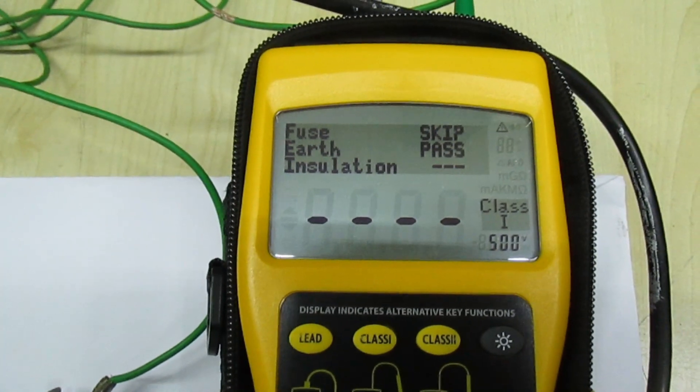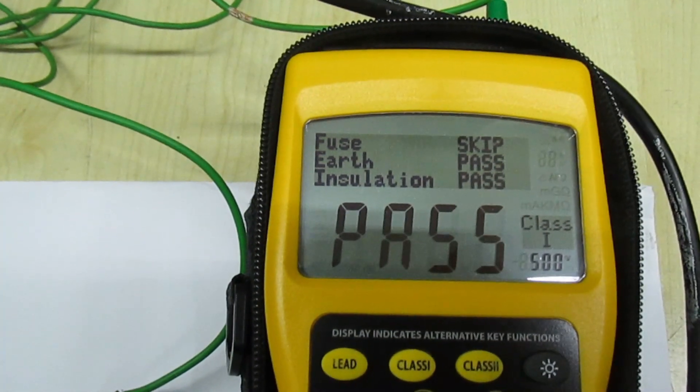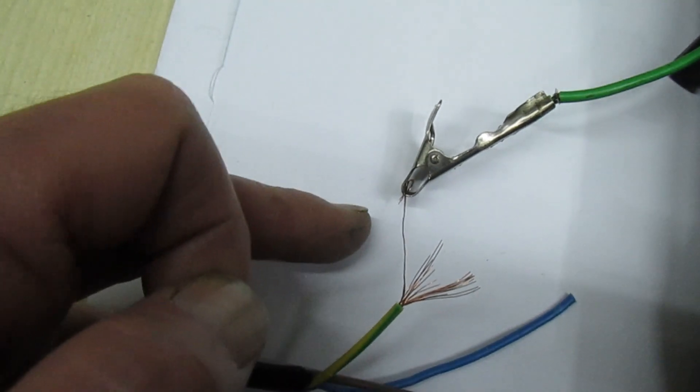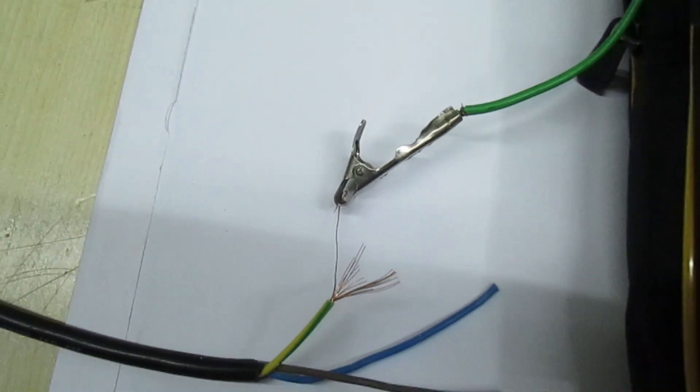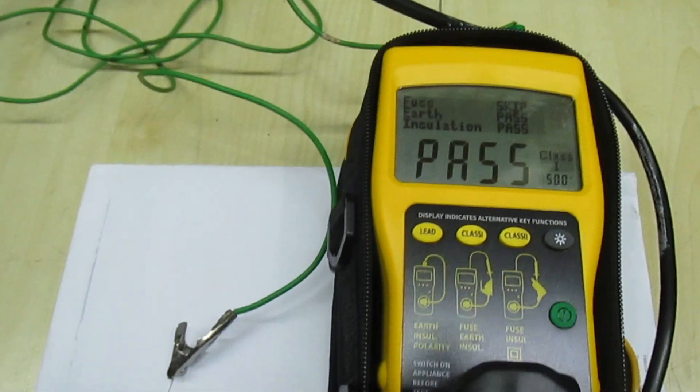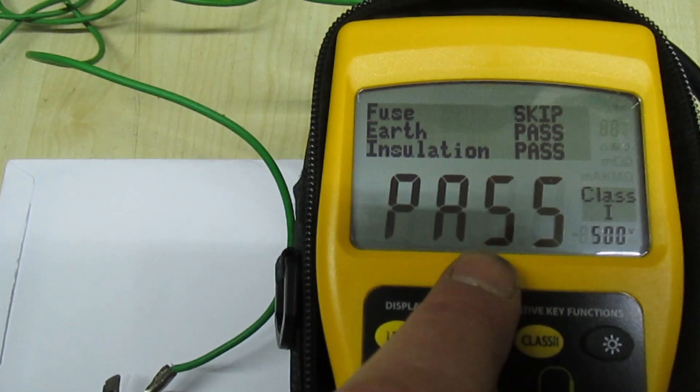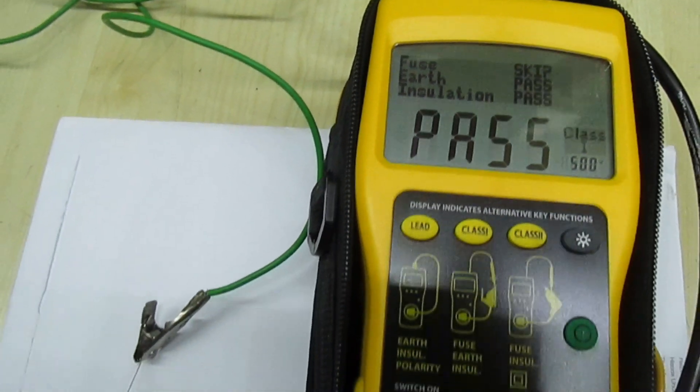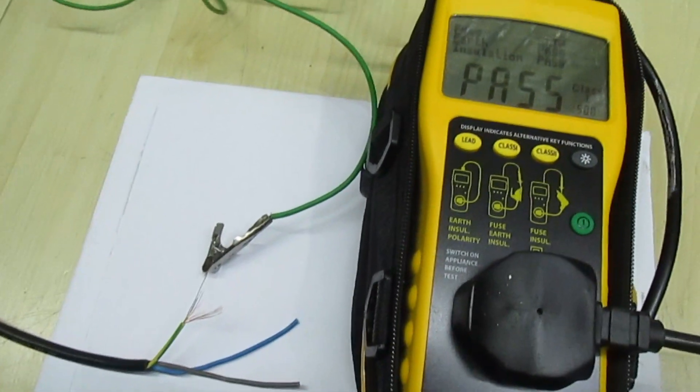So if you look there, ignore the insulation test. If you look there it's actually passed on the earth bond test. Now don't forget this is a very frayed piece of wire. If you can see how many conductors there I've cut to fray that. Now although that's given it a pass, you would think this is safe to use but let me show you on my preferred PAT tester now which I always use on class one equipment and we'll see what happens.